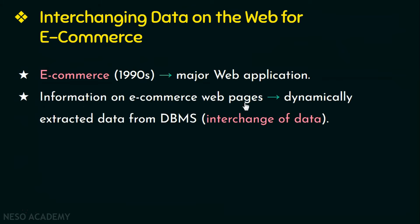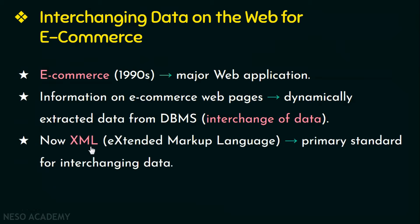E-commerce, or electronic commerce, emerged in the 1990s as the major web application. Information on e-commerce web pages was data dynamically extracted from the DBMS when required, creating an interchange of data between the web and the database. XML, or the Extensible Markup Language, is considered the primary standard for interchange of data between web pages and databases.